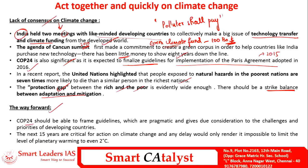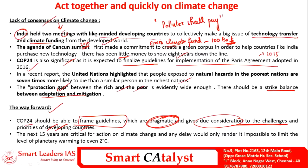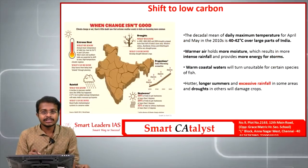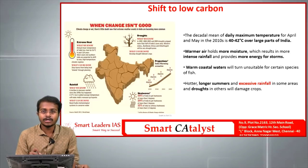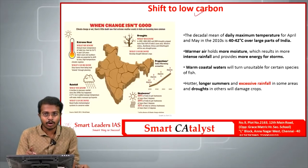The way forward is that COP24 should frame pragmatic guidelines that give due consideration to the challenges and priorities of developing countries, which would help developing nations to further progress. The next 15 years are considered critical for action on climate change; any delay would render it impossible to meet the ambitious goal of the Paris Agreement, which set a target to limit warming to 1.5 degrees Celsius within 2100. Following this climate change context, it is imperative for India to shift its economy towards a low carbon economy.